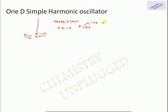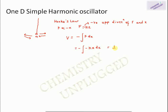We can write F = −kx, where k is the force constant and the negative value denotes the opposite direction of force and displacement. We can also calculate the potential energy of this particle by integrating force with respect to displacement: V = −∫F dx = −∫(−kx)dx, which gives V = ½kx².